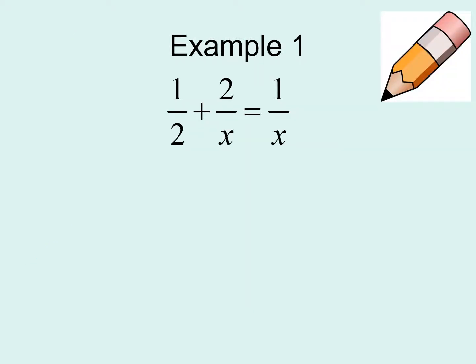Example number one: one-half plus two over x is equal to one over x. In order to solve this rational equation, we need to first get a common denominator — a least common denominator. One of my denominators has a two in it, and my other two denominators have an x in it. So my least common denominator is going to be 2x.